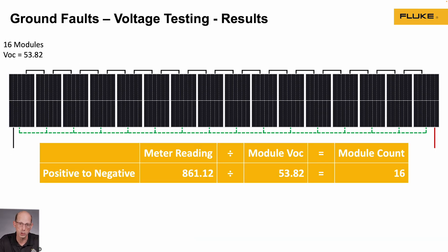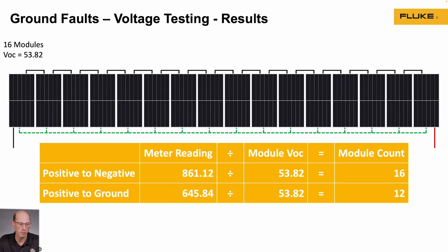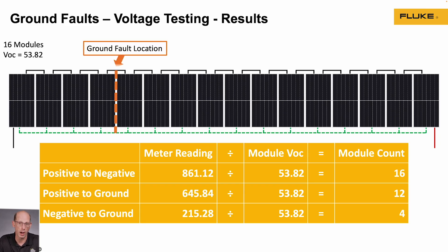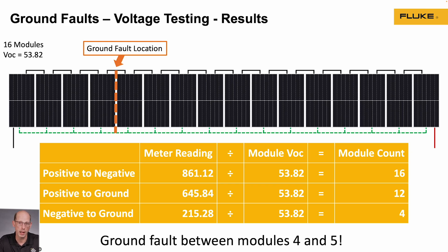When I look at the voltage readings: positive to negative was approximately 861 volts — divide that by 53 volts per module and I get about 16 modules, which is what I'd expect. Positive to ground of 645 volts divided by 53 volts gives me about 12 modules. Negative to ground of 215 volts divided by 53 gives me about 4 modules. This tells me there are 4 modules between the negative and the ground fault, and 12 modules between the positive side and the ground fault — meaning the ground fault is somewhere between module 4 and 5.